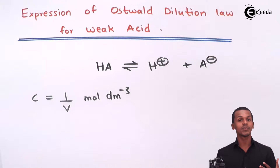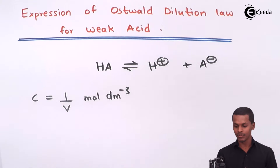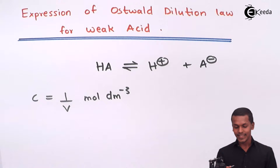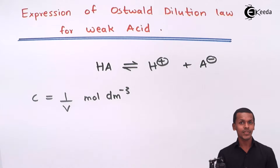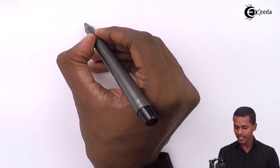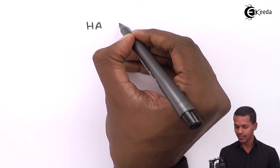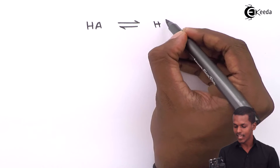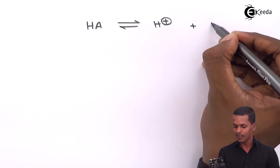V is basically the volume of the solution of the electrolyte — the solution where we obtain this equilibrium. So, let us start by taking the expression for HA as the weak acid, which on dissociation gives H⁺ ion as well as A⁻ ion.